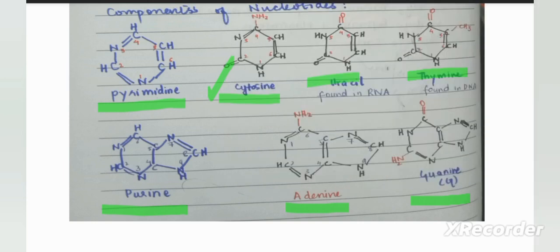Let's see the structural differences between pyrimidines and purines. Pyrimidines are single-ringed structures and purines are double-ringed. Pyrimidines are six-atom-containing rings — you can see the six atoms in the ring. In purines, a six-membered ring and a five-membered ring fuse together to form the purine structure.